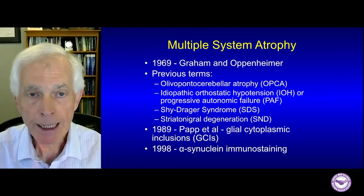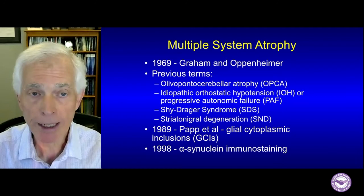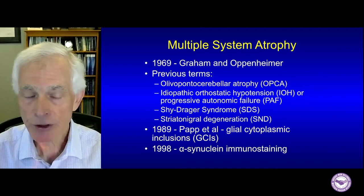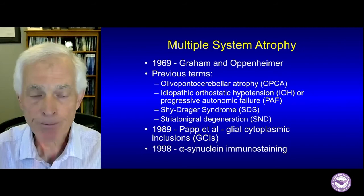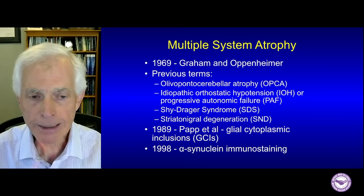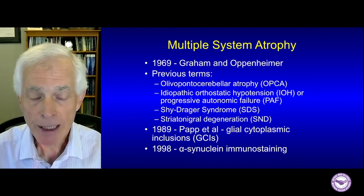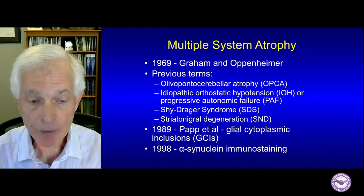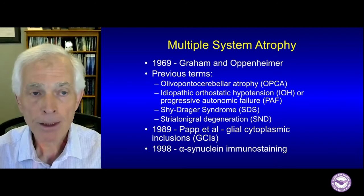Multiple system atrophy has a long history. The term was coined in 1969, but was well recognized before that. Graham and Oppenheimer recognized that a group of disorders had similarities — previously called olivopontocerebellar atrophy, idiopathic orthostatic hypotension, Shy-Drager syndrome, and striatoniagral degeneration. In 1989, Papp and colleagues recognized glial cytoplasmic inclusions (GCIs) confirming these were the same condition. In 1998, alpha-synuclein was recognized as the hallmark protein.